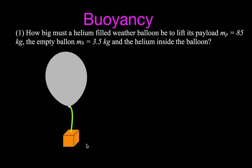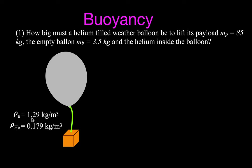This is the first problem: we want to know how big must a helium-filled weather balloon be to lift three things — the payload which has a mass of 85 kilograms, the empty balloon which has a mass of 3.5 kilograms, and the helium inside the balloon. We're going to figure out the radius, assuming a spherical balloon. The density of air is 1.29 kg/m³ and the density of helium is 0.179 kg/m³.